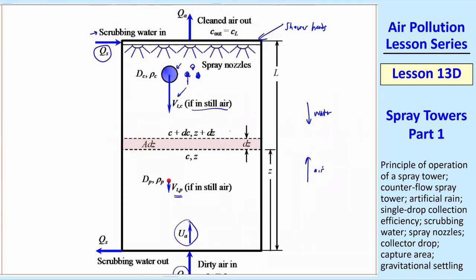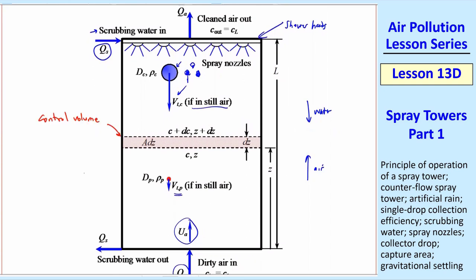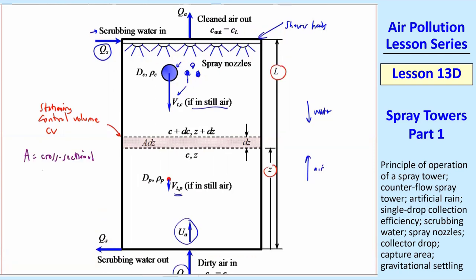In other words, the particles will be going up with the air a little bit slower than the air because they're also falling. The raindrops will be falling at a much higher speed, but a little bit slower than VTC because they're fighting against the air. We're going to look at a control volume or CV that's stationary. So it's not moving. It's at some height Z from the bottom. The total height of this tower is L and A is the cross-sectional area of the tower. So our little control volume has a volume of A times DZ.